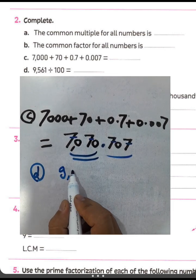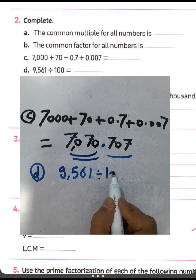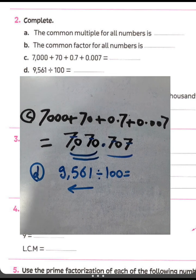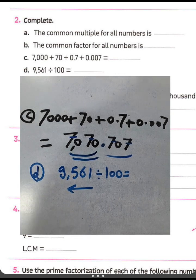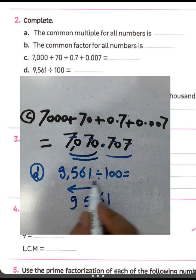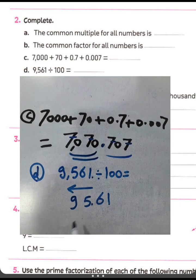Nine thousand five hundred sixty-one divided by one hundred: we must move the decimal point to the left by two digits. Put a zero behind the point and move it — the result will be ninety-five point sixty-one, or ninety-five and sixty-one hundredths.